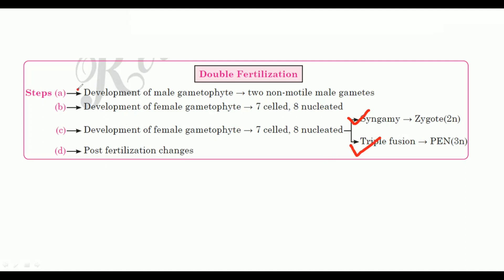The development of the male gametophyte is from a single cell pollen grain — unicellular — forming two non-motile male gametes. Development of the female gametophyte produces a seven-celled and eight-nucleated structure. That leads to fertilization and the post-fertilization changes.